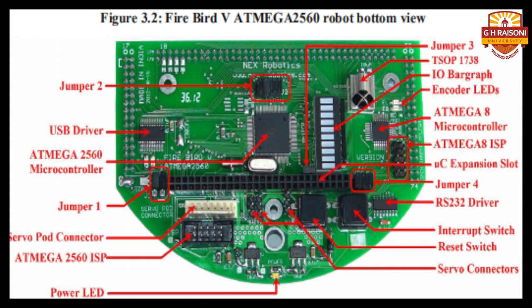As you can see in this figure, the adapter board of microcontroller ATmega 2560 and its various components are highlighted. There are 4 jumpers, 1 RS232 driver and servo motors. Some of the pins are already discussed in the previous lecture modules.